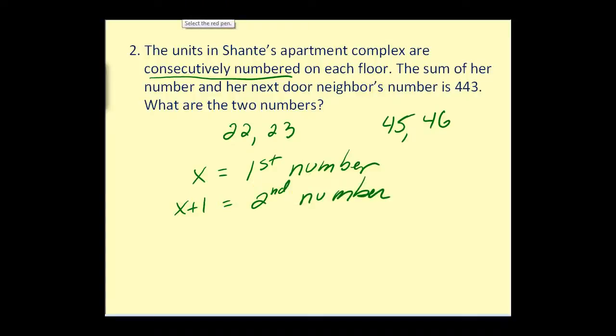Next, to form our equation, it says the sum of her number and the next number is 443. Well, sum means addition. So our equation is going to be the first number plus the second number must equal 443. So there's our equation to solve. Let's do the first step by combining our like terms. So our equation becomes 2x plus one equals 443.